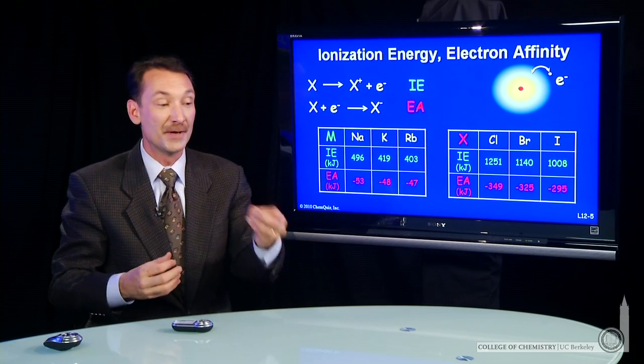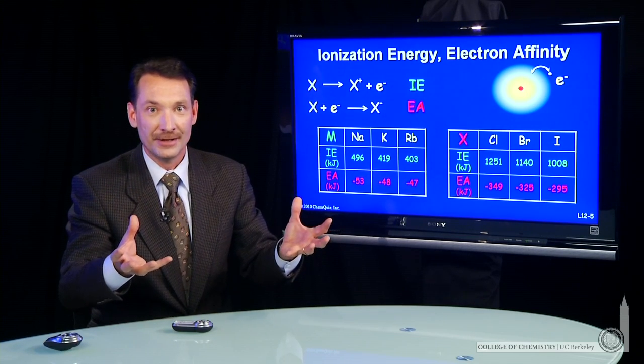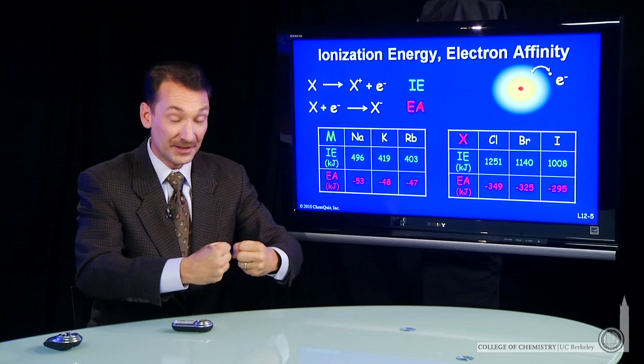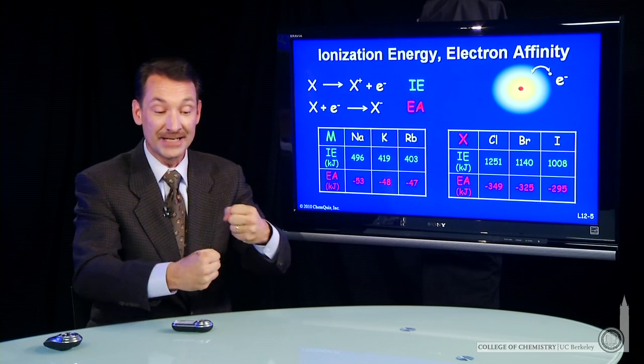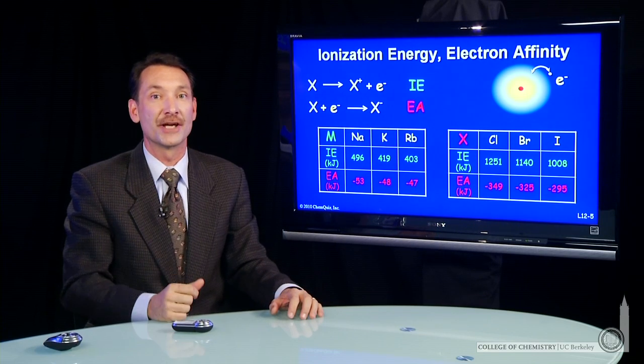We'll see metallic sodium and gaseous chlorine dramatically form sodium chloride. And that's because that stabilization of the ionic bonded lattice is a very strong interaction.